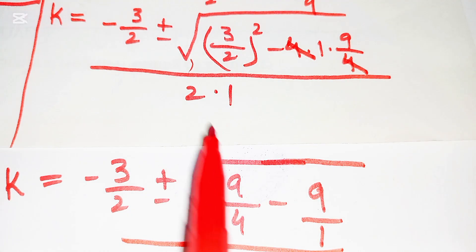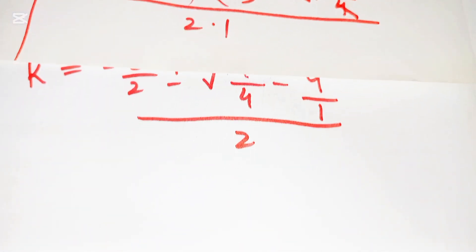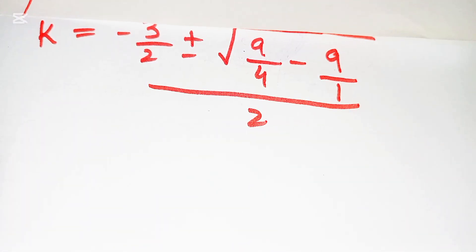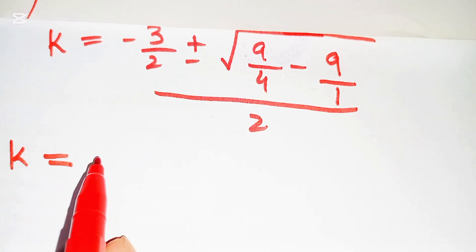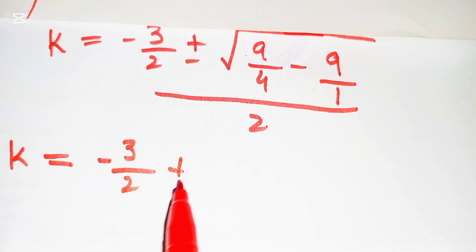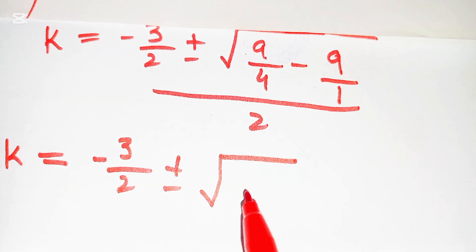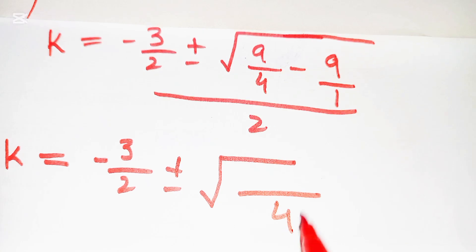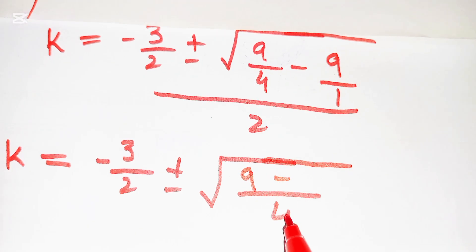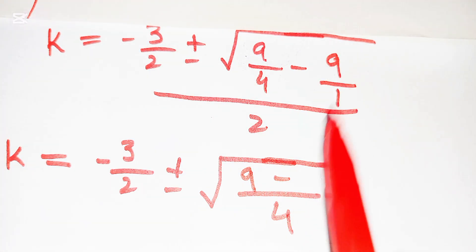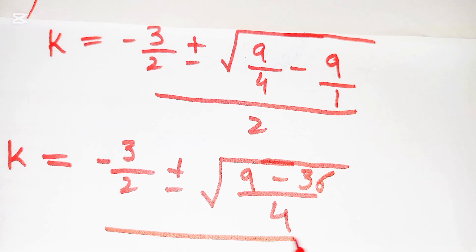Then k = (−3/2 ± √((9 − 36)/4)) / 2. Taking the LCM gives 9 − 36 = −27 over 4.